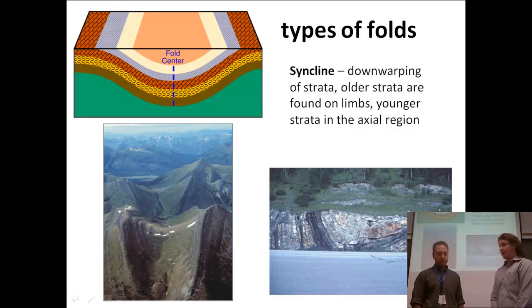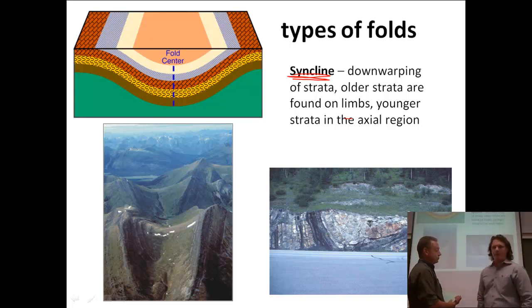Alright, types of fold. First fold over here, let's take a look. Syncline. Downwarping of strata. Older strata are found on the limbs. Younger strata is in the axial region. So a couple of different definitions here. There are a couple of words that we're going to have to define maybe a little bit.